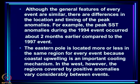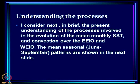Although the general features of every event are similar, there are differences in the location and timing of the peak anomalies. For example, the peak SST anomaly during the 1994 event occurred about 2 months earlier compared to the 1997 event. The eastern pole is located more or less in the same region for every event because coastal upwelling is an important cooling mechanism. In the west, however, the regions covered by positive anomalies vary considerably between events. We need to understand the processes to model and eventually predict these.